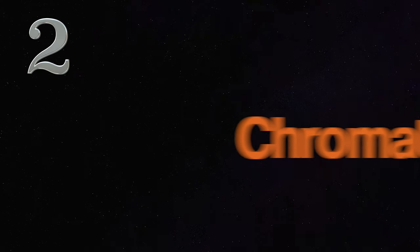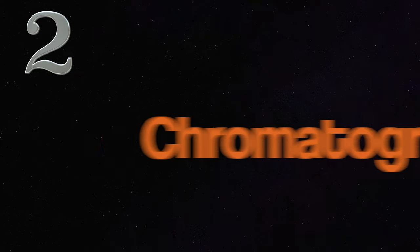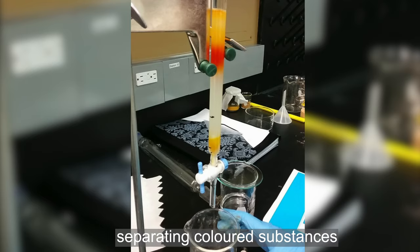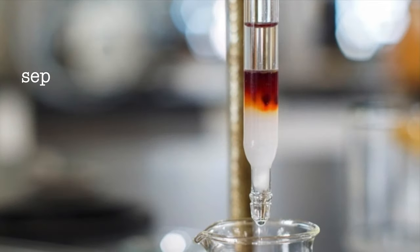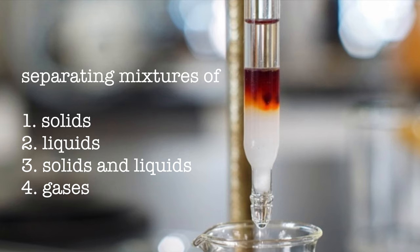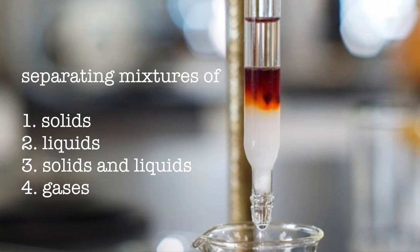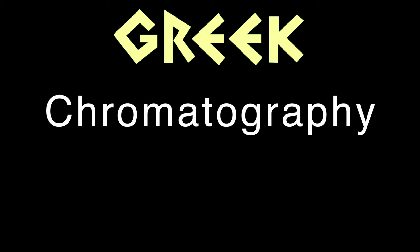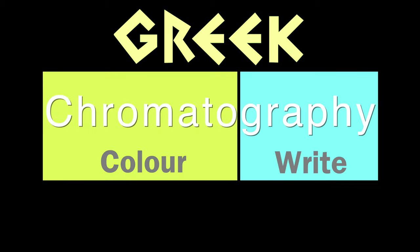Number 2. Chromatography. Chromatography is a method for separating colored substances into individual pigments. It is quite versatile to separate mixtures of solids, or of liquids, or mixtures of solids and liquids combined, or mixtures of gases in the case of gas chromatography. The name chromatography comes from the Greek word chroma, meaning color, and graph, meaning to write.